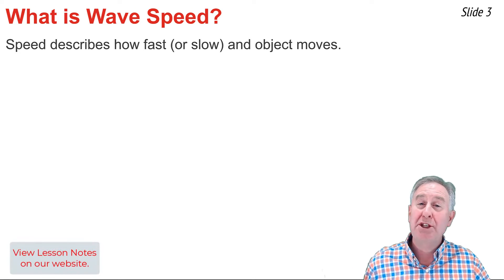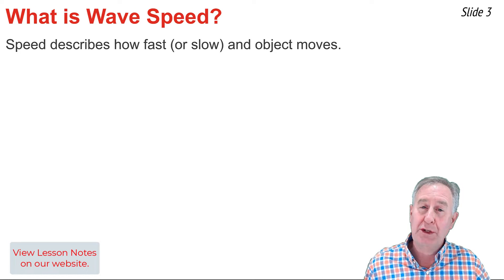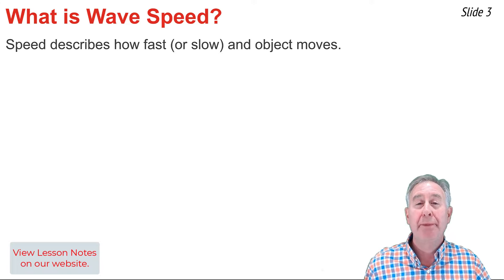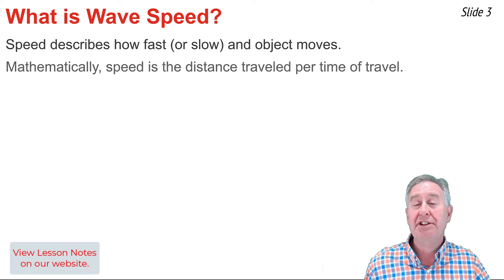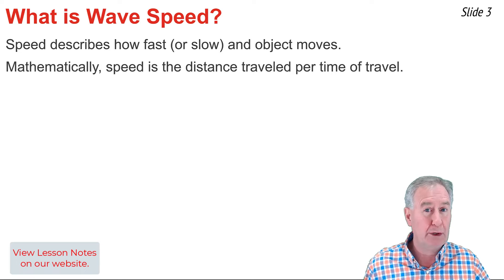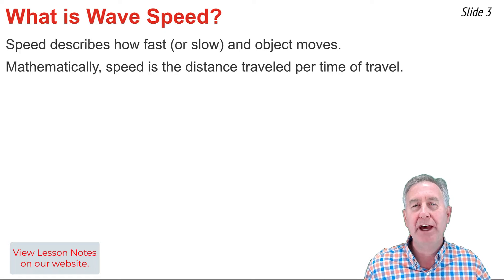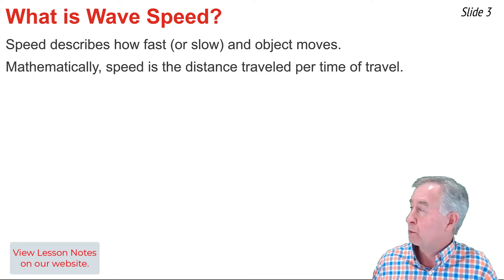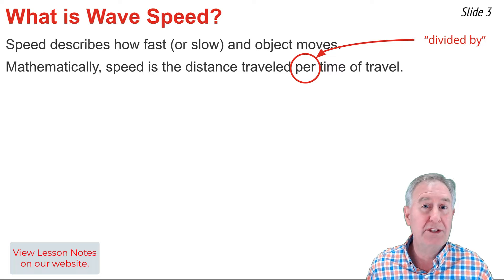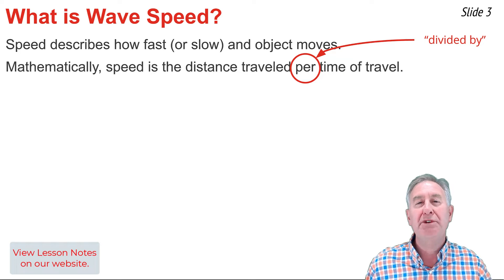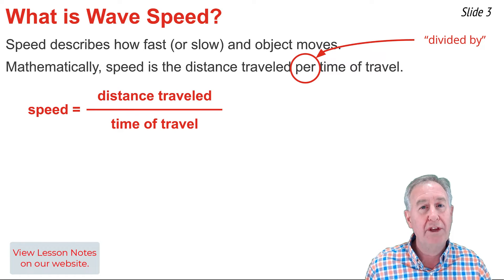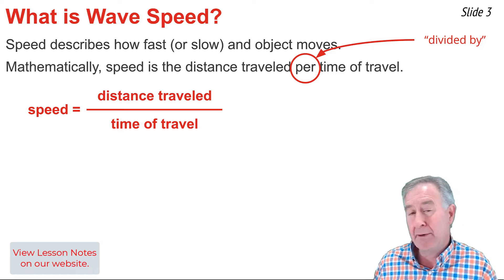For any given object, the speed describes how fast or how slow that object is moving. Mathematically, speed is defined as the distance an object travels per time of travel. When you see a mathematical definition like this with the word per in it, per means divided by. So the formula for speed would be speed equals the distance traveled per time of travel.